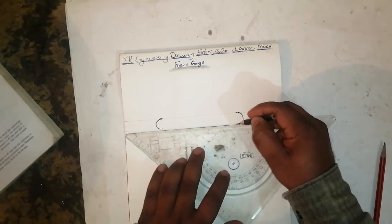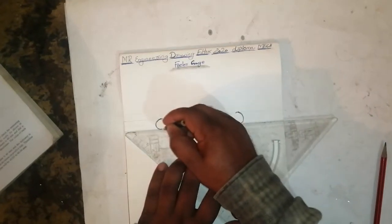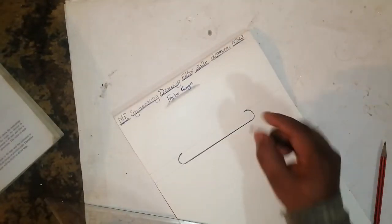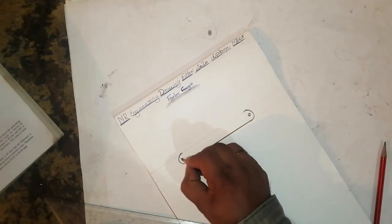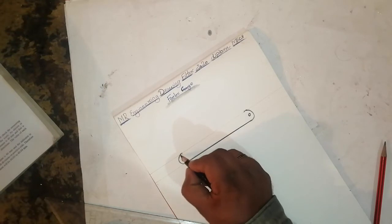And join this edge to this edge. This is called a rivet. And one more, it is a rivet.